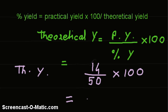That equals 28, and the unit will be grams because the unit of practical yield is in grams. So the theoretical yield is 28 grams. The yield is always for the product, and our product is calcium oxide.